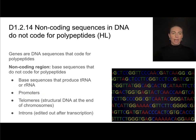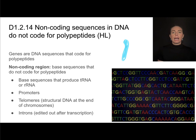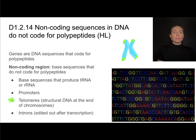Non-coding regions might include base sequences for how to produce tRNA or rRNA. Even though those are important, they are not polypeptides. This could also include promoters — they don't get transcribed. Then there are telomeres, which are very cool pieces of structural DNA at the ends of chromosomes. In their replicated form, you might recognize the classic X shape. Telomeres are like little caps at the end of a chromosome, and they are structural DNA that prevents damage, especially during mitosis.